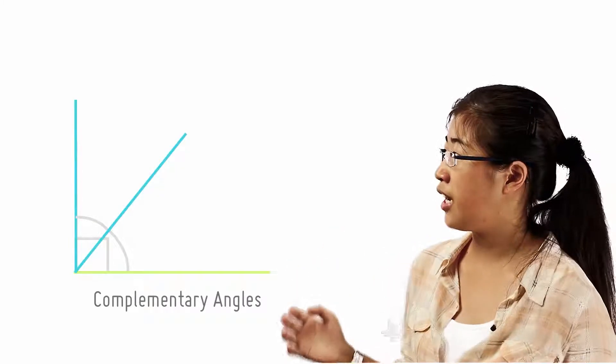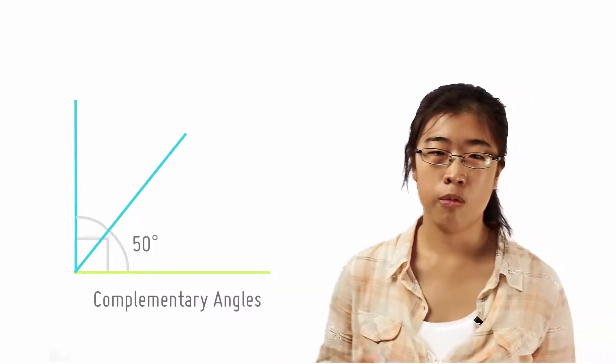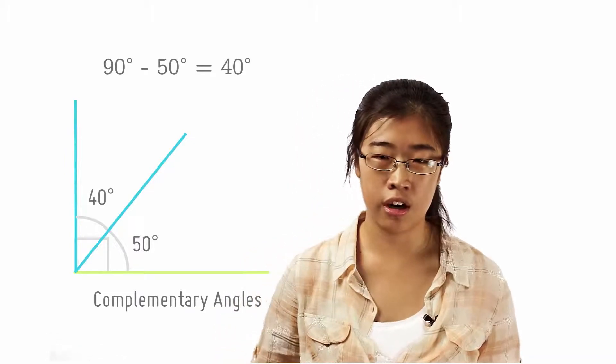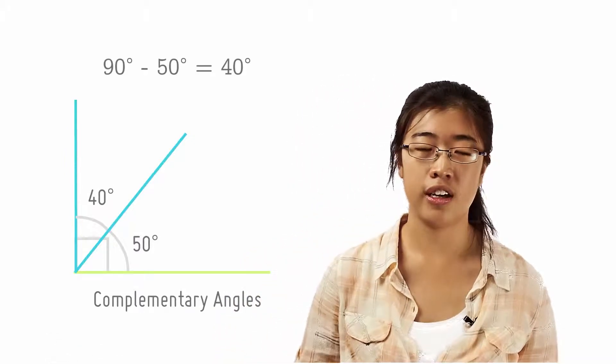For example, to find a complementary angle of 50 degrees, we simply subtract 50 degrees from 90 degrees to obtain 40 degrees. Thus, the complementary angle of 50 degrees is 40 degrees and vice versa.